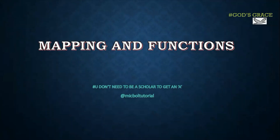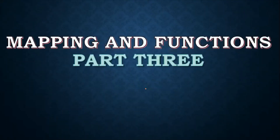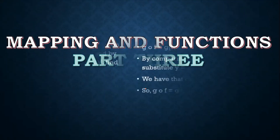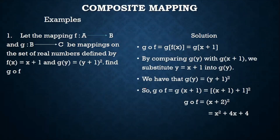Welcome once again to this channel. Our topic is mapping and functions, part three. Remember our hashtag: you don't need to be a scholar to get an A. In the previous part we talked about the types of mapping — one-to-one mapping and onto mapping — and I introduced composite mapping. In this part we are going to be looking at composite mapping and inverse functions.